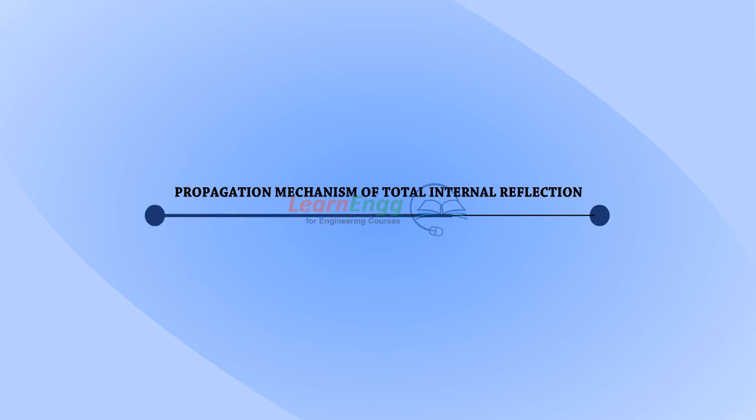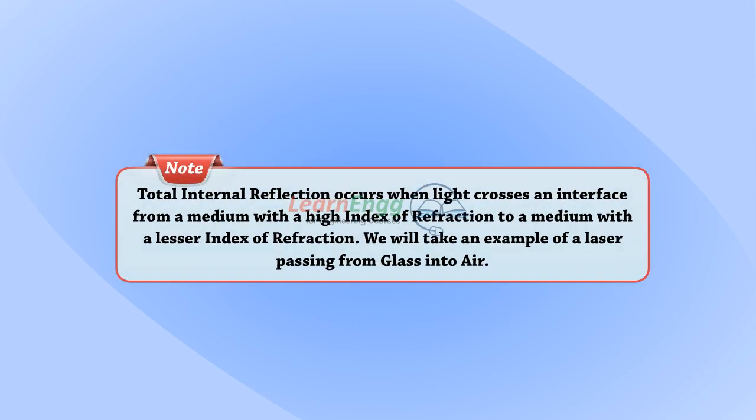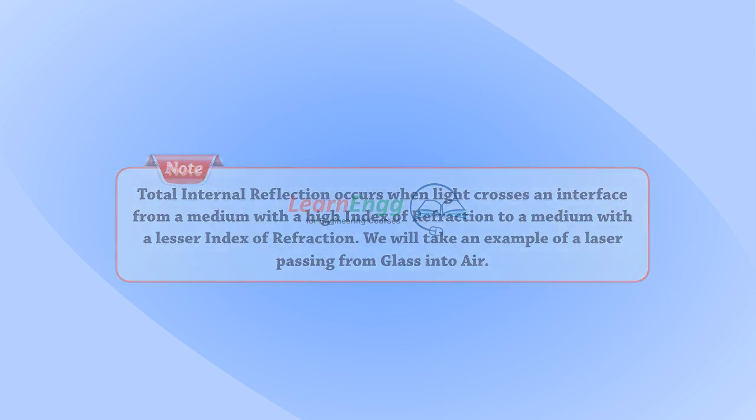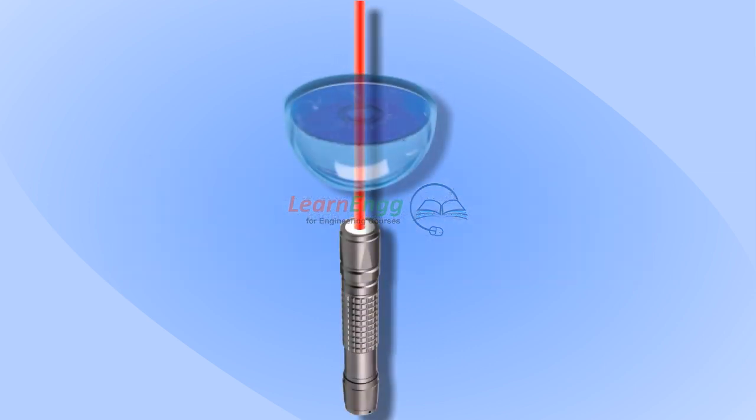In this video we are going to see about propagation mechanism of total internal reflection. Total internal reflection occurs when light crosses an interface from a medium with a high index of refraction to a medium with a lesser index of refraction. We will take an example of a laser passing from glass into air, i.e. from more denser to less denser medium.